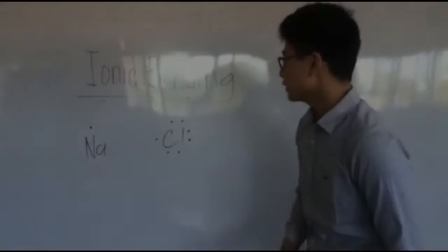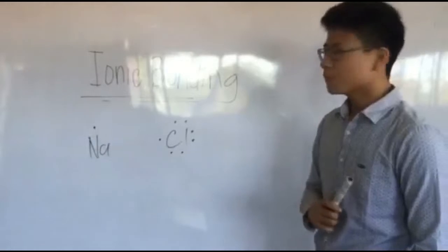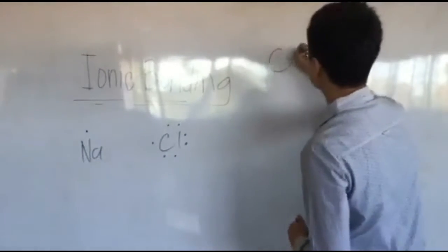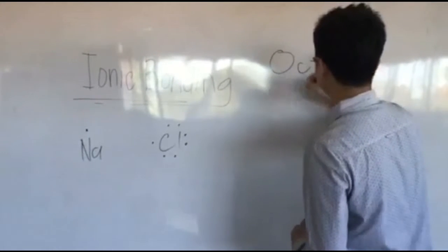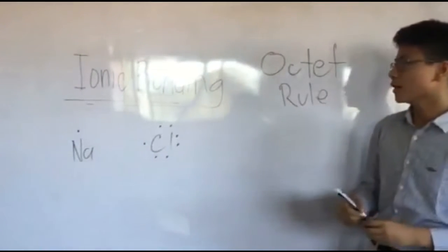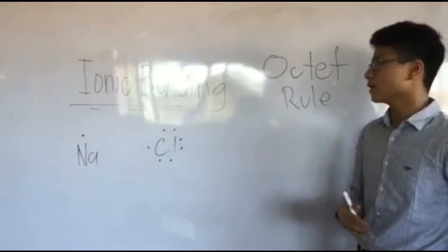Now we will discuss ionic bonding. But first, we have to discuss the octet rule, as this is needed for ionic bonding. This is vital to understand what is ionic bonding.